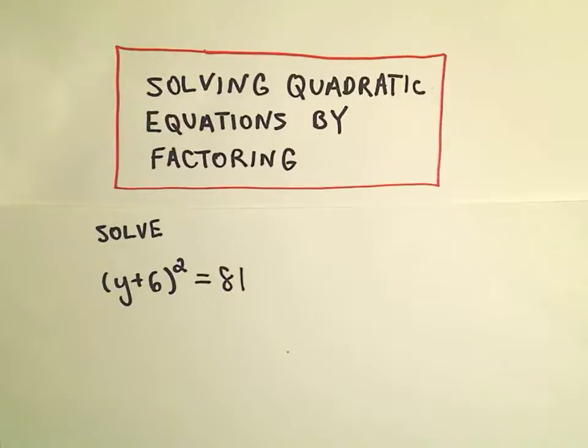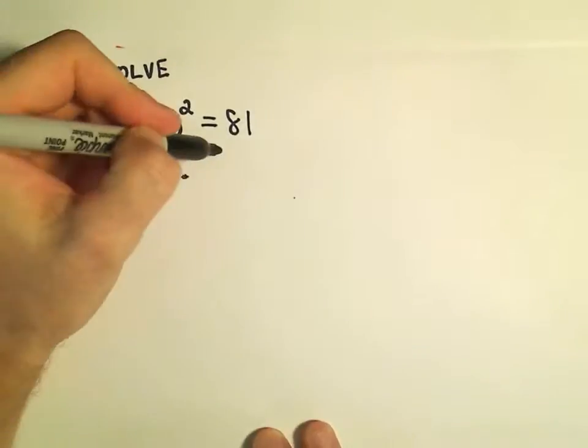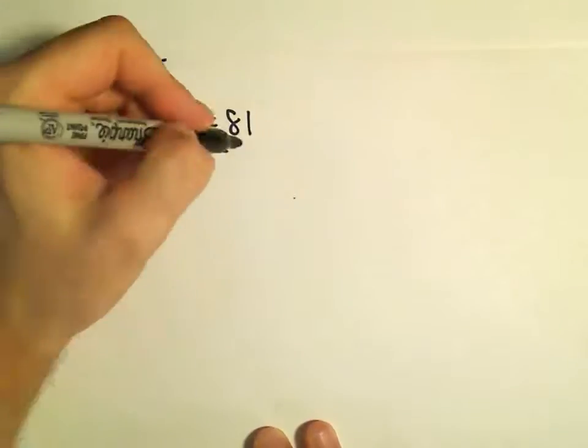Okay, in this case, the first thing I'm going to do, since I'm going to try to factor it: we want one side of our quadratic equation to equal zero. So I'm going to subtract 81 from both sides.